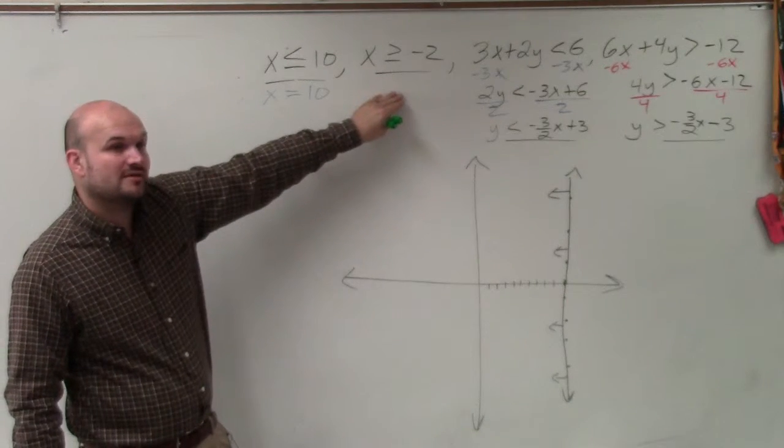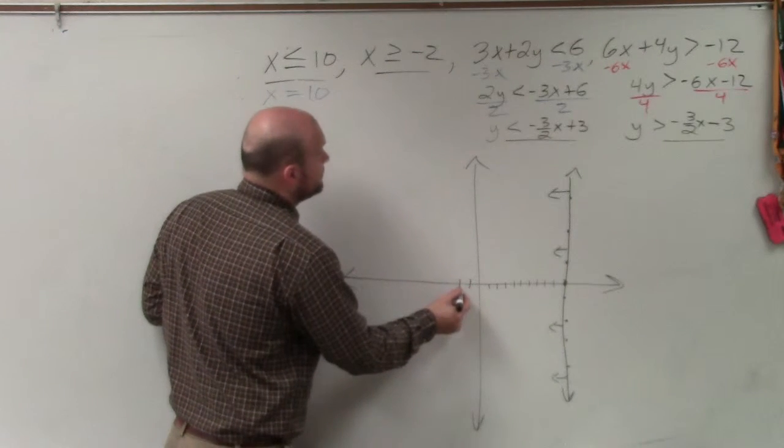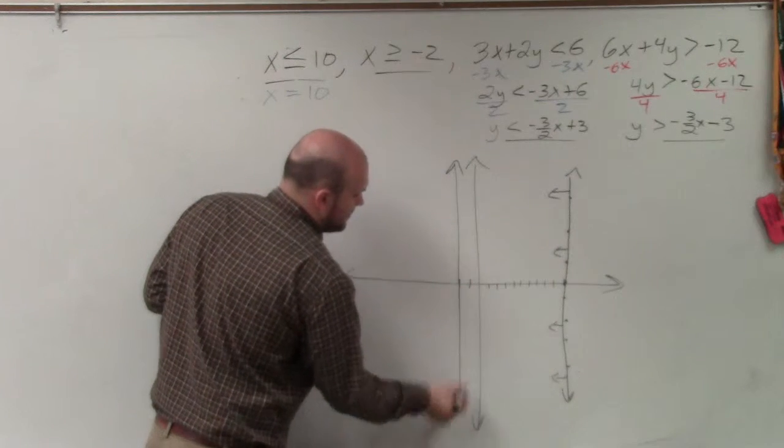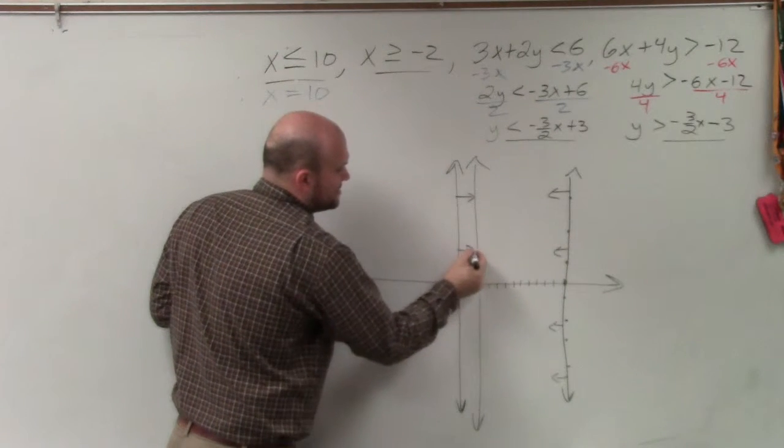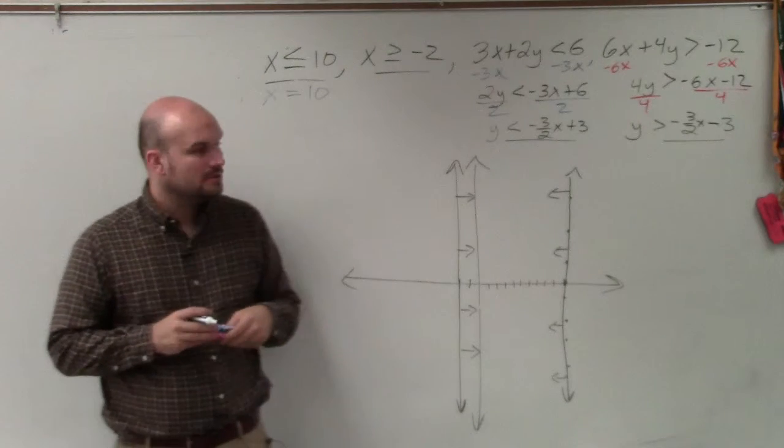The next one says x is greater than negative 2. Well, that's going to be a vertical line at negative 2. And that's a less than or greater than equal to, so that's solid, and that's going to be all values going to the right. Does everybody follow me?